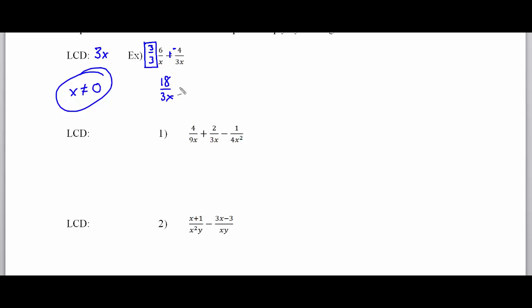Now I have 18 over 3x plus a negative 4 over 3x and now I can combine them under one denominator of 3x because I have a common denominator. When you add and subtract rationals or any fraction you keep the denominator the same and the numerator is the part that actually gets shifted or added or subtracted. So the 14 over 3x is my final answer to the problem.